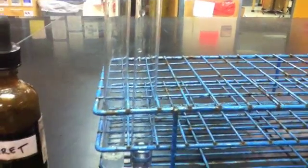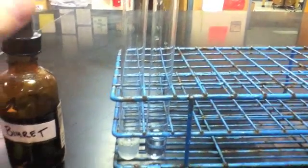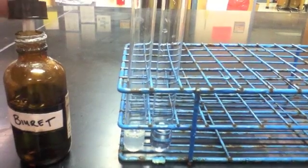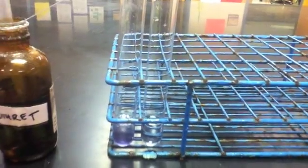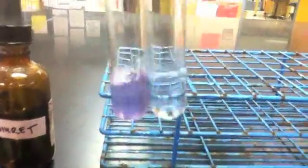I now take biuret and add it to the positive control tube. As expected, when added to the positive control tube, we yield a purplish color denoting the presence of proteins.